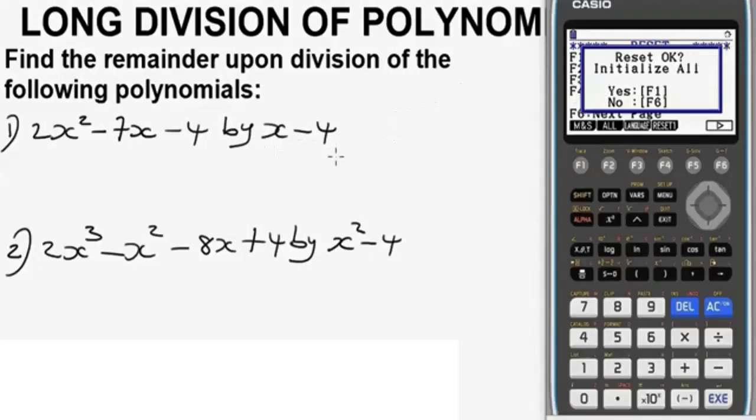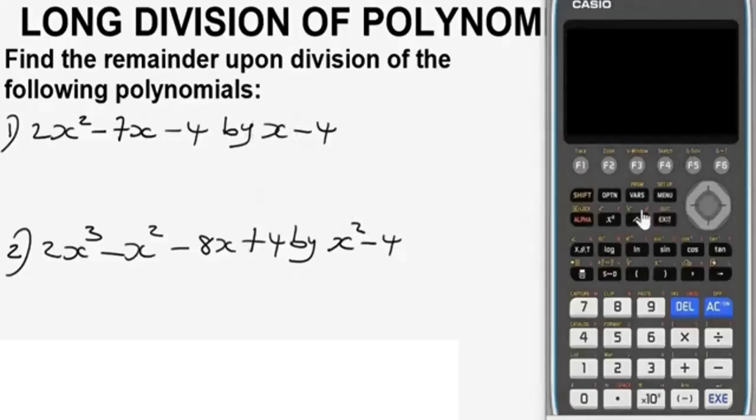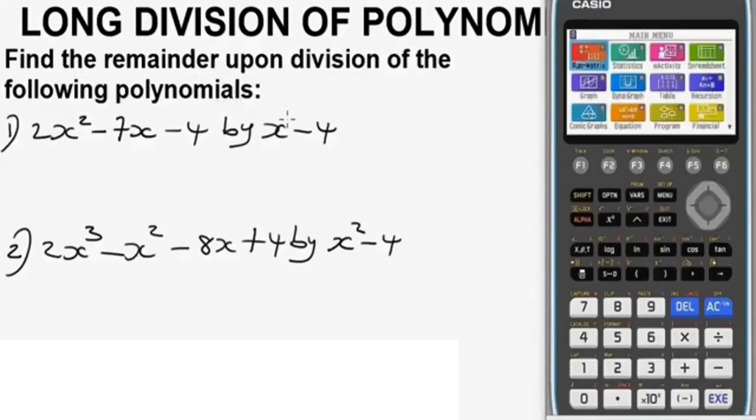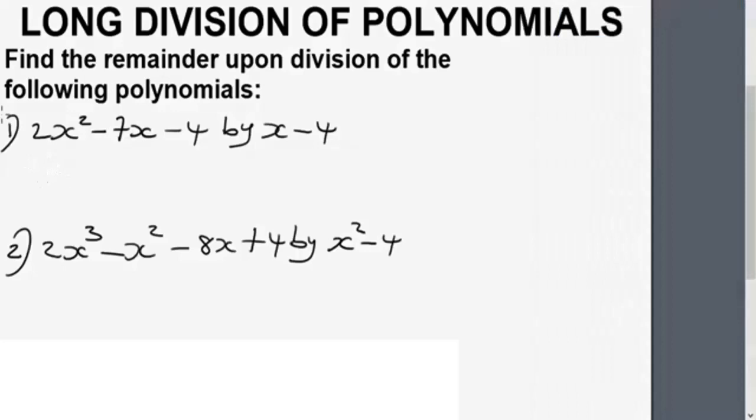So we have this question on long division of polynomials we'll do with the Casio calculator. Now the equation says find the remainder upon division of the following polynomials. Now to find the remainder of these various polynomials we have here, beginning with question one, the idea is to take this divisor that is dividing this dividend we have here. The divisor is x minus 4, you equate it to zero. So this will be x minus 4 equals 0. Now to make x the subject of the formula here, this 4 crosses the equality sign, I'm going to have x equals 4.